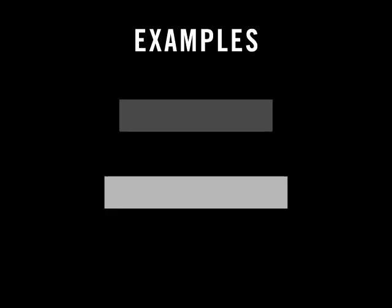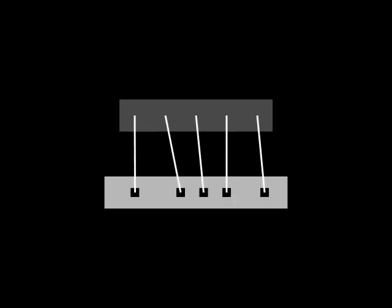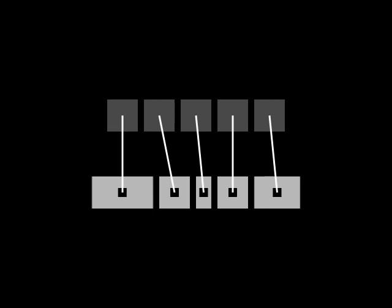The desired translations are learned from examples. To build a style translation model, a user provides pairs of matching motions in the desired input and output styles. For each pair of motions, each frame of the input is mapped to stylistically corresponding pieces of the output.